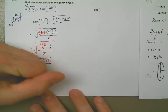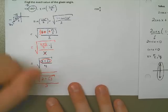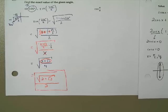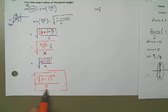You can check this on your calculator — you'll get some decimal. Then type in 2 plus the square root of 3, take the square root of that answer, and divide by 2, and you'll get the exact same decimal.